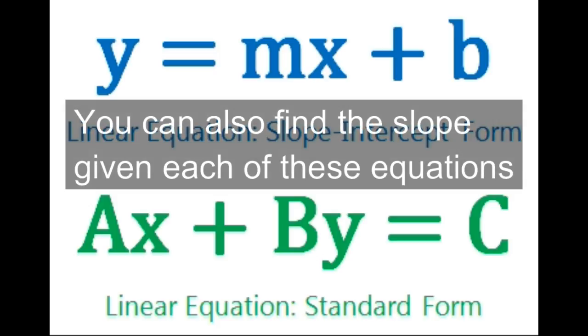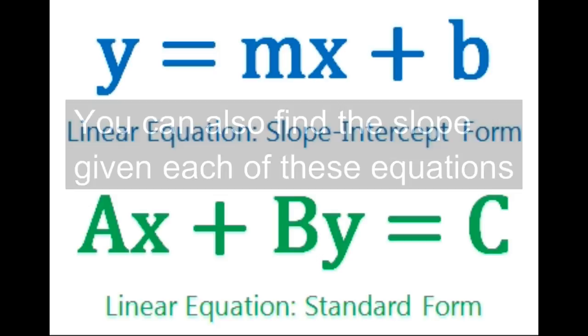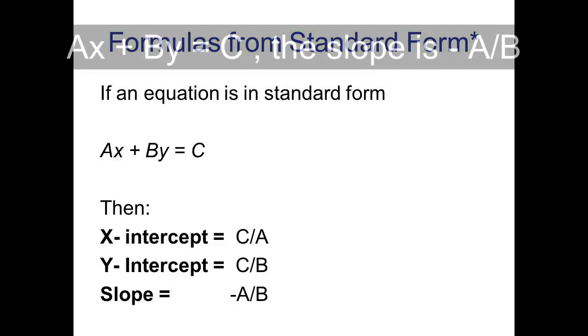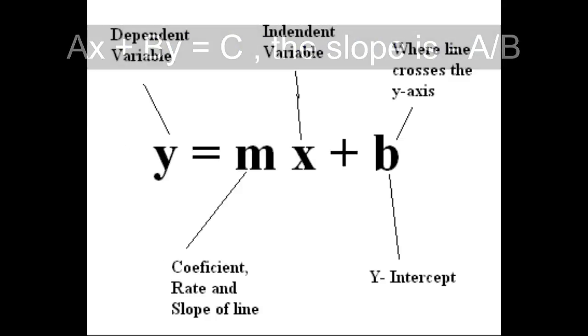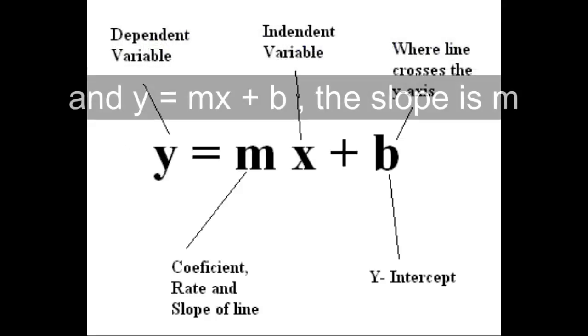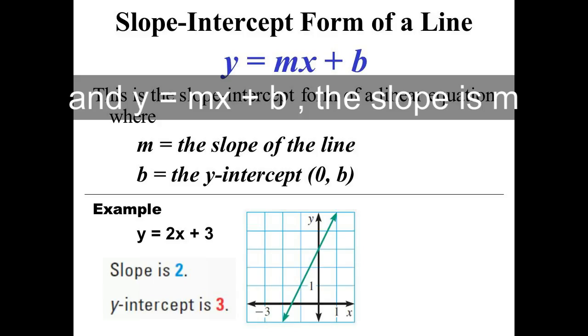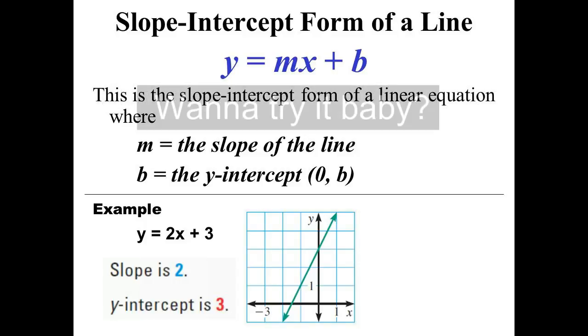You can also find the slope given each of these equations. For Ax plus By equals C, the slope is the opposite of A over B. For y equals mx plus b, the slope is m.